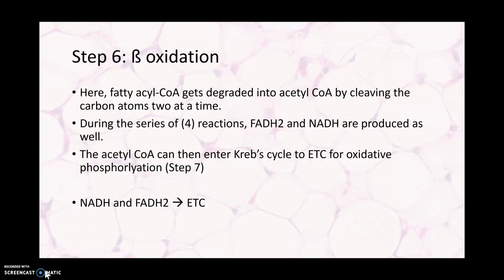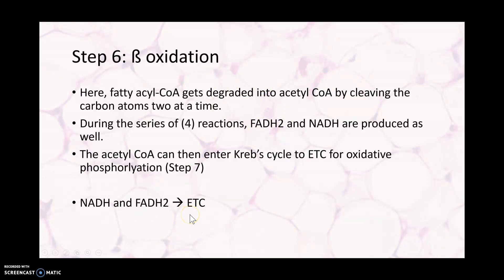Step six of lipolysis is called beta oxidation. Here, fatty acyl-CoA gets degraded into acetyl-CoA by cleaving off carbon atoms two at a time. During this series of four reactions, FADH2 and NADH are also produced. The acetyl-CoA can then enter the Krebs cycle and eventually the electron transport chain for oxidative phosphorylation, while NADH and FADH2 go directly to the electron transport chain.